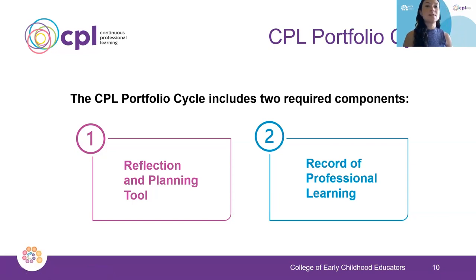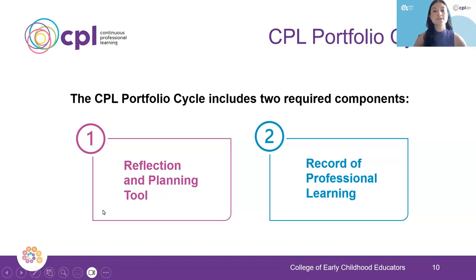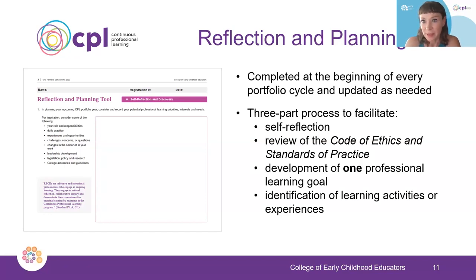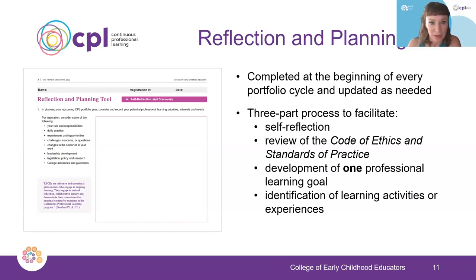This slide highlights what the two required components are of the revised CPL portfolio cycle. The first component is the reflection and planning tool, and the second component is the record of professional learning. The reflection and planning tool is the beginning of the process. You complete it at the beginning of every new portfolio cycle and then it's updated as needed. It's a three-part process that facilitates self-reflection, a review of your code of ethics and standards of practice, supports you in developing one professional learning goal, and helps you in identifying the learning activities or experiences you've selected to complete that goal.